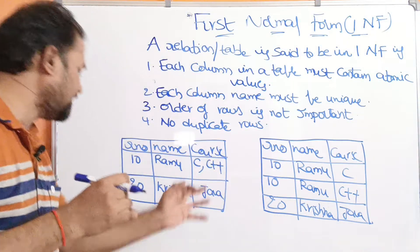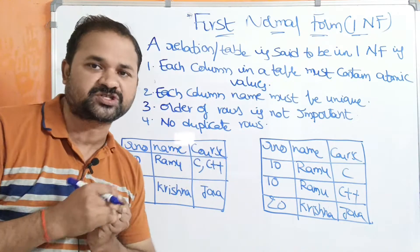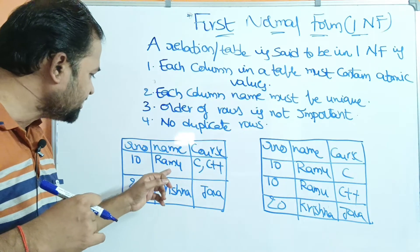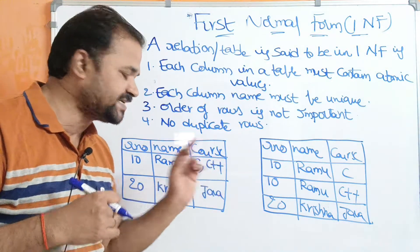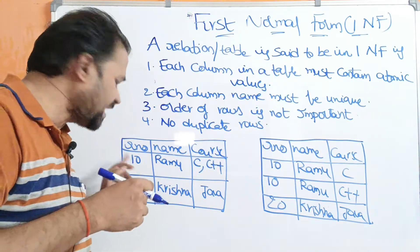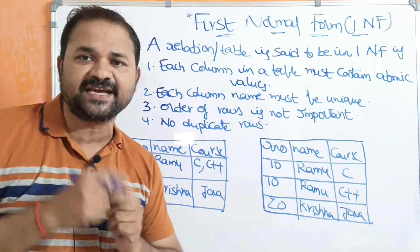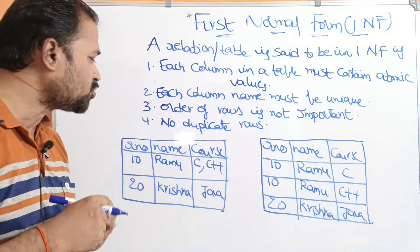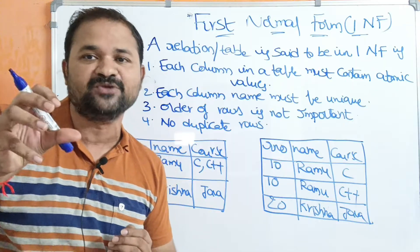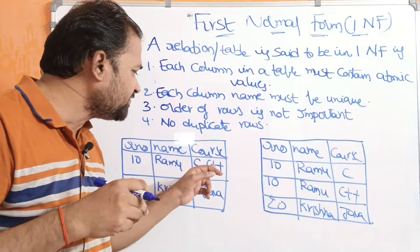If you see this table, here we have three columns: roll number, name, and course. We have two records, where the first record roll number is 10, name is Ramu. Ramu registered for two courses, such as C and C++. Here roll number is atomic — it contains a single value. Name is also atomic. But coming to course, it is not atomic; it contains two values. It is a multi-valued attribute: first one is C, second one is C++.